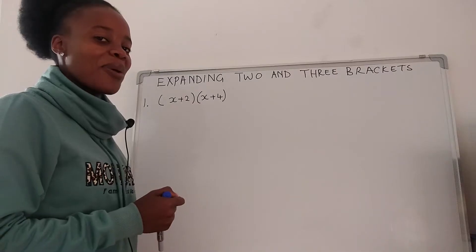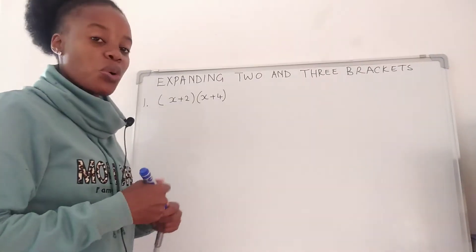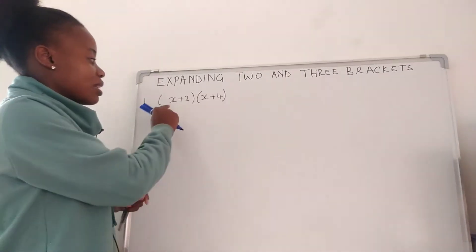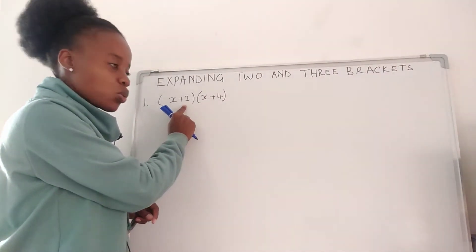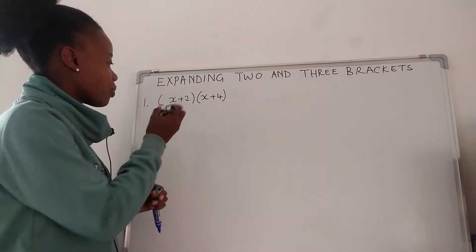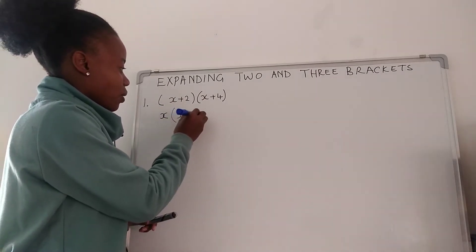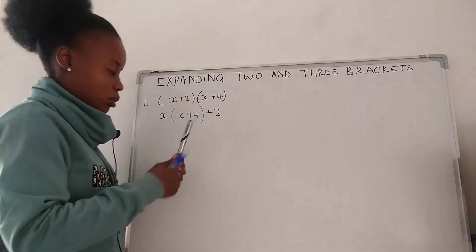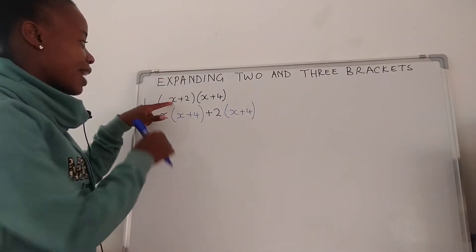Check number one: we have (x + 2) in brackets times (x + 4) in brackets. We're going to simplify — we're going to remove brackets. Just know that you're going to multiply the first term, which is x, with everything on this side, and the second term, which is 2, with everything on this side. So we're going to have x(x + 4) plus 2(x + 4).